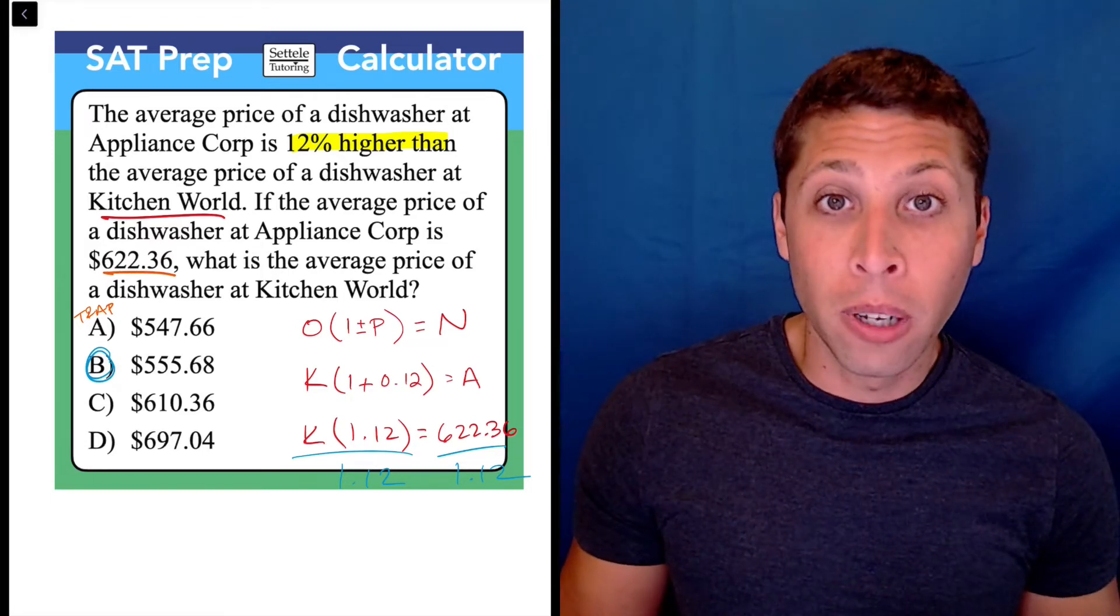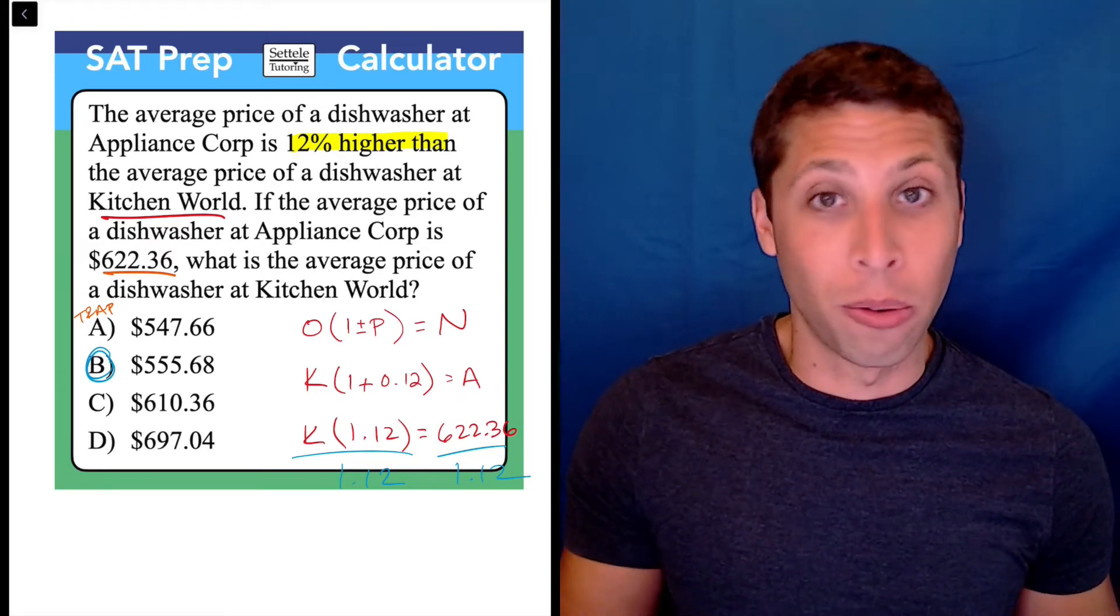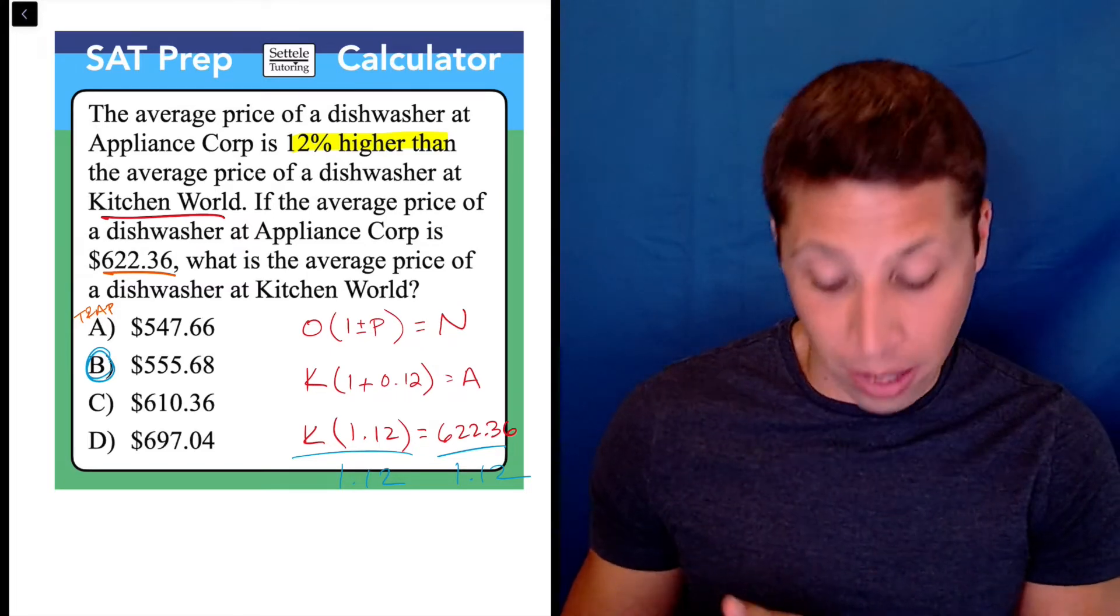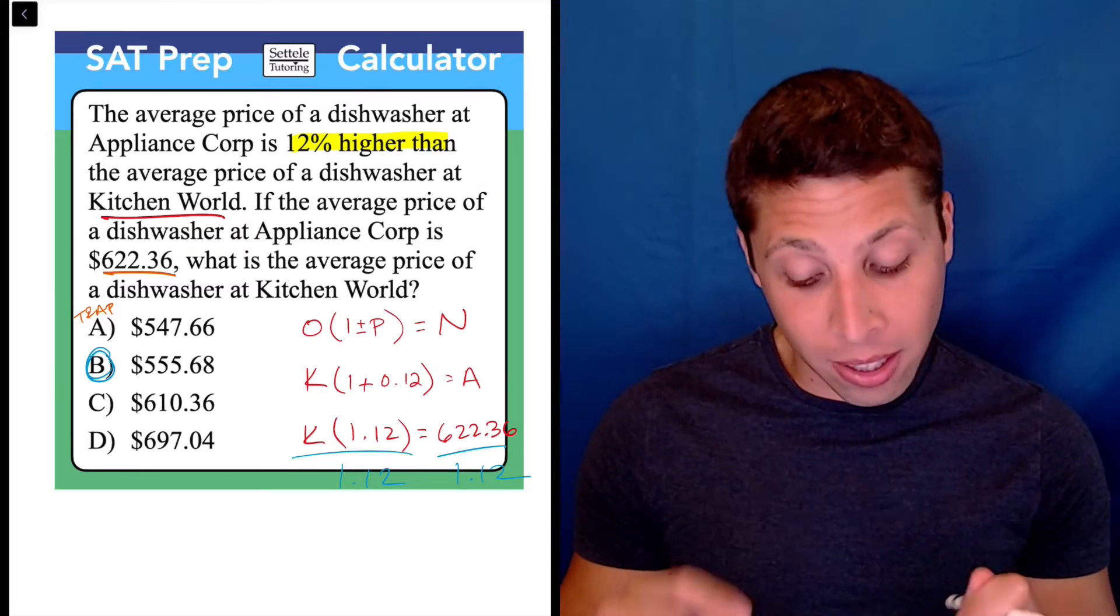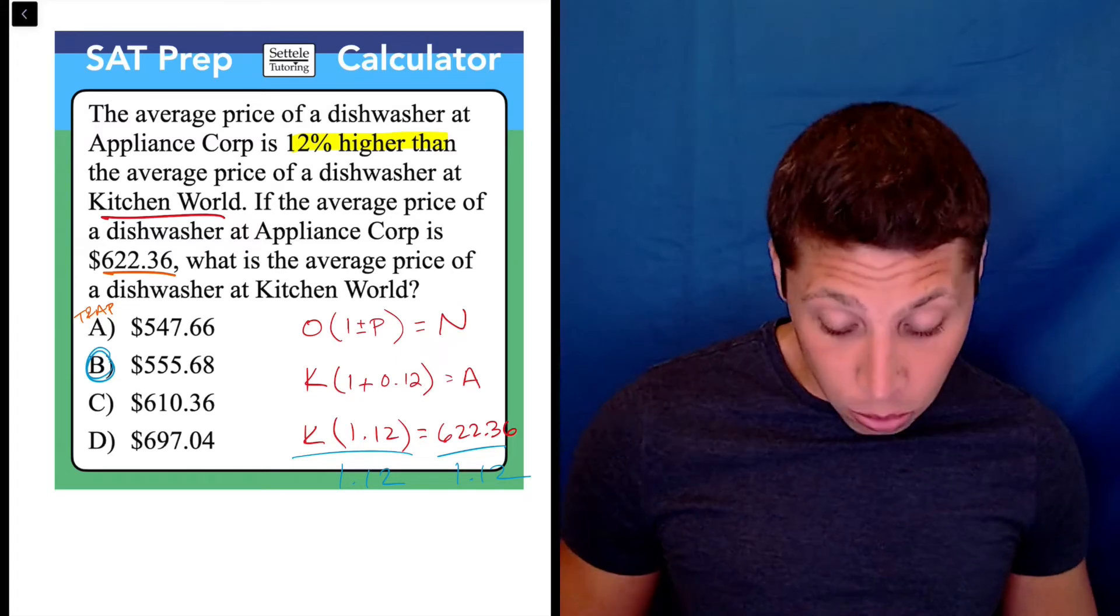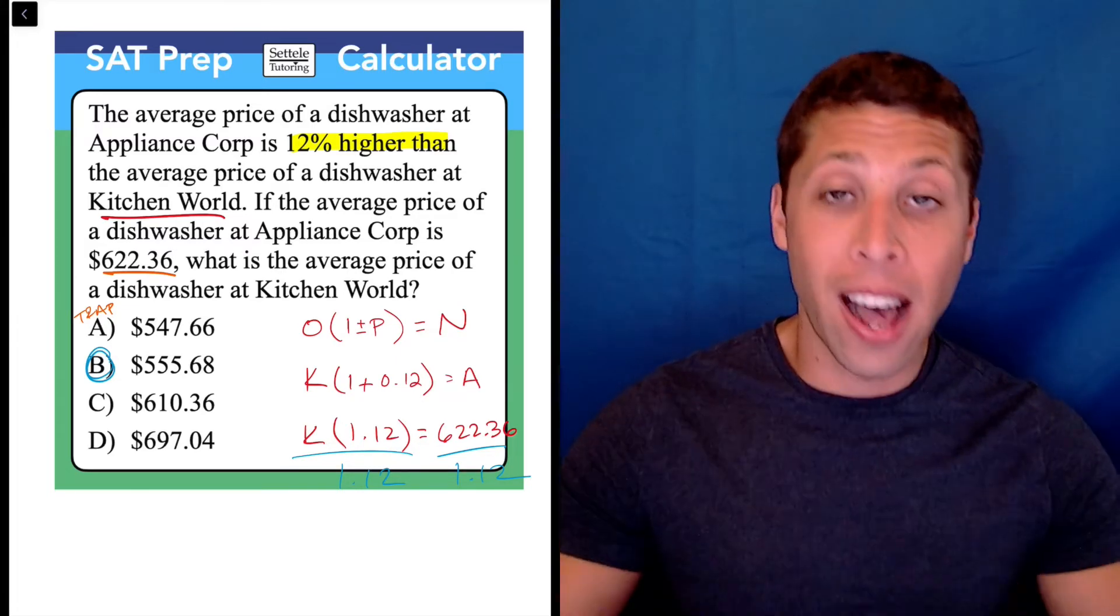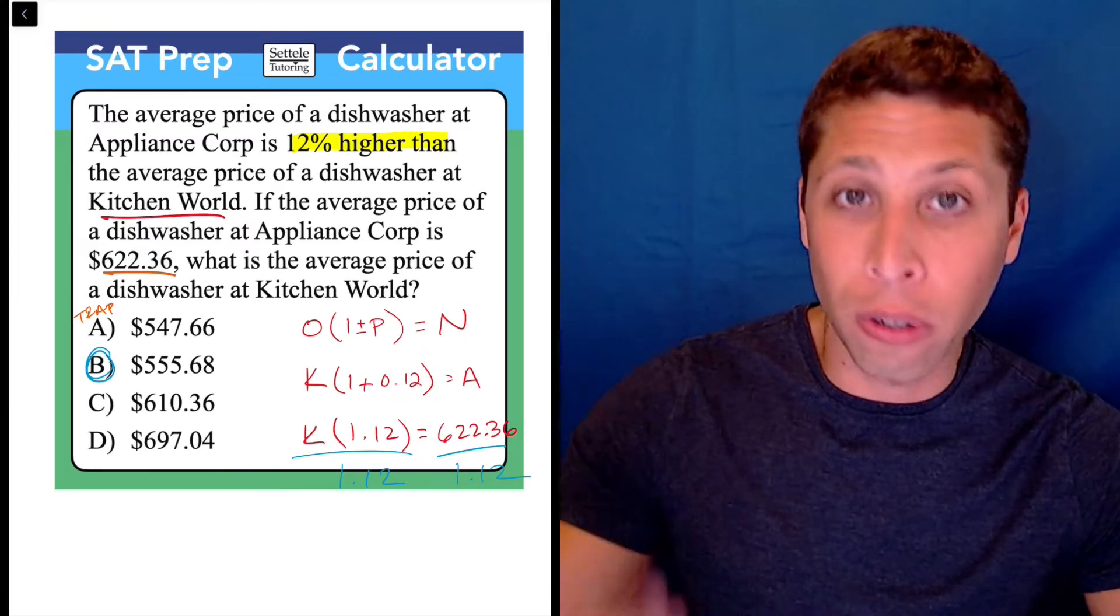So you do 0.12 times 622.36, and you subtract out whatever that number is, and I guarantee you it's going to give you choice A. It's close to choice B, but it's not exact, and the SAT will absolutely do this.